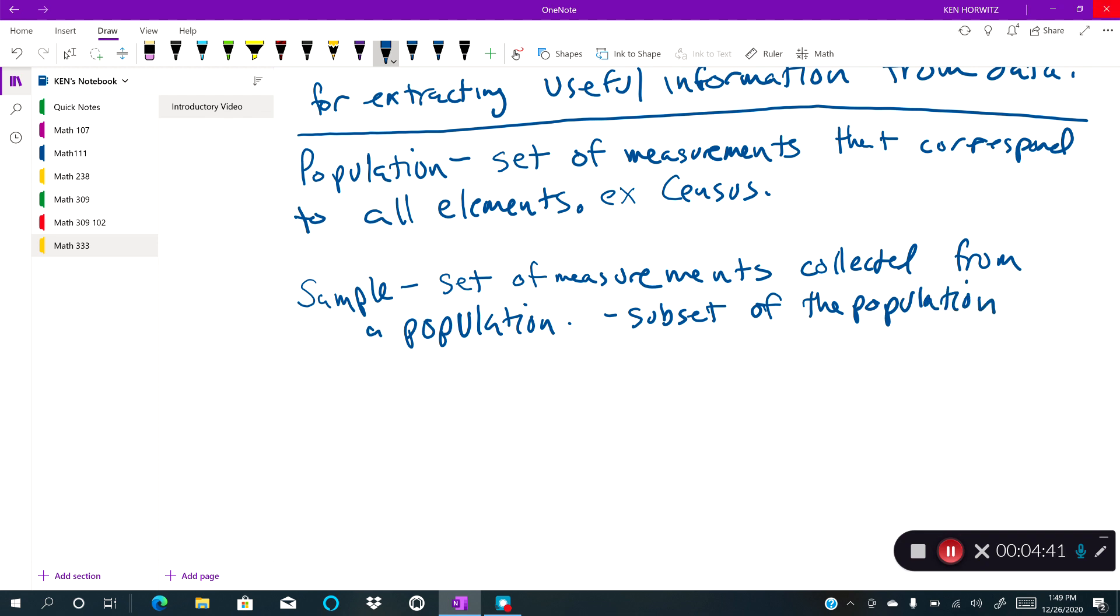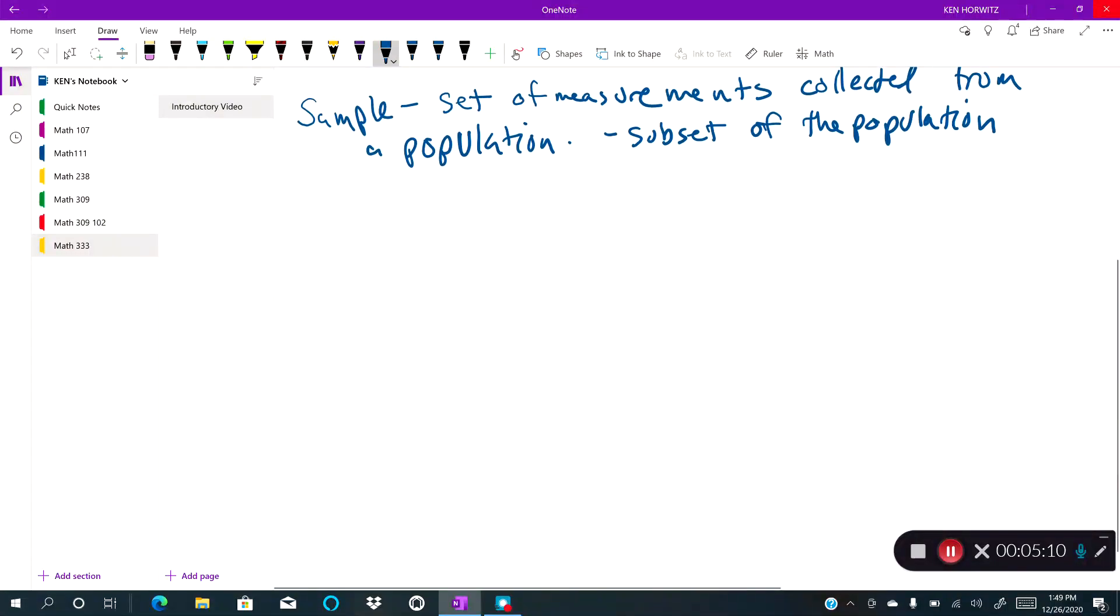For example, we could do it geographically. Like I said, the people of the state of New Jersey would be a sample based on the population of the United States. We can also do it by characteristics. So let's say we were doing eye color of the people of the United States. We could say a sample would be all the blue-eyed people in the United States, or all the brown-eyed people in the United States would be a sample of the entire population.